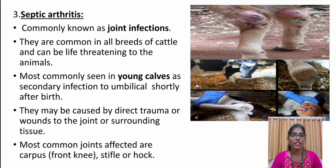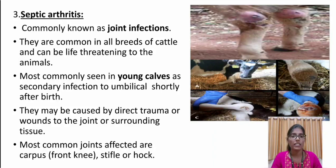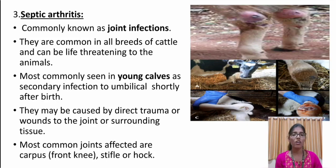Septic arthritis, commonly known as joint infections, is common in all breeds of cattle and is life threatening to the animals. It is most commonly seen in young cows as a secondary infection to umbilical issues. They may be caused by direct trauma or wounds to the joints or by surrounding tissues. The most common joints affected by septic arthritis are the carpus, stifle, or hock.